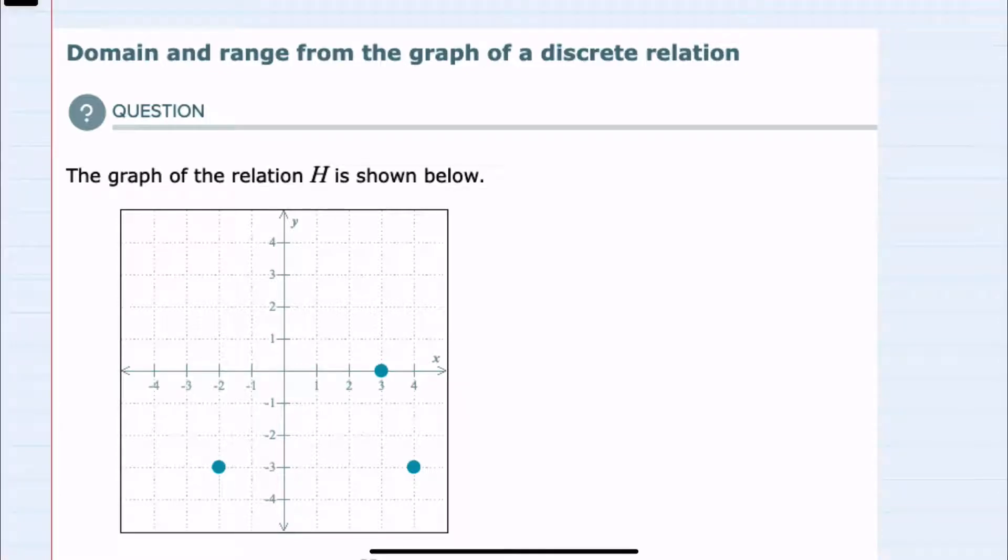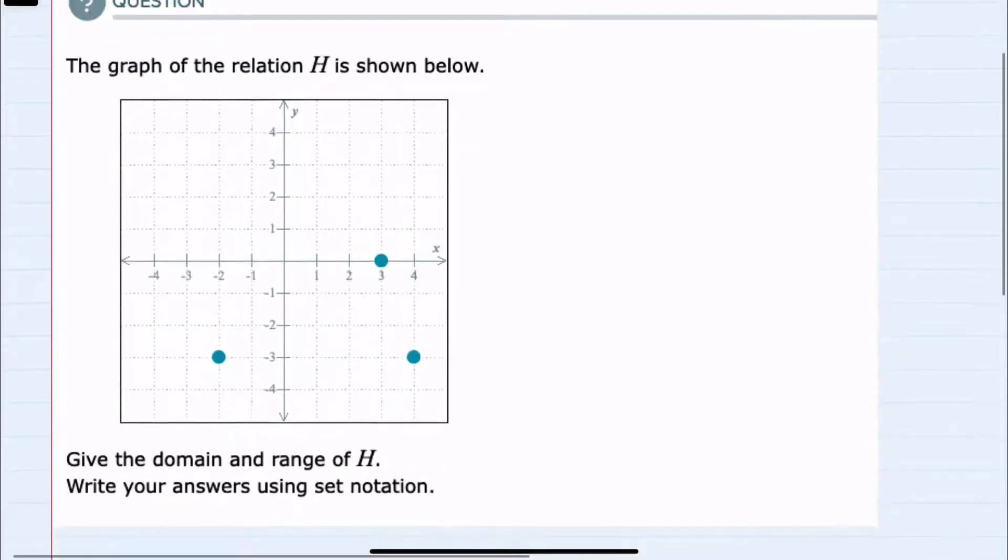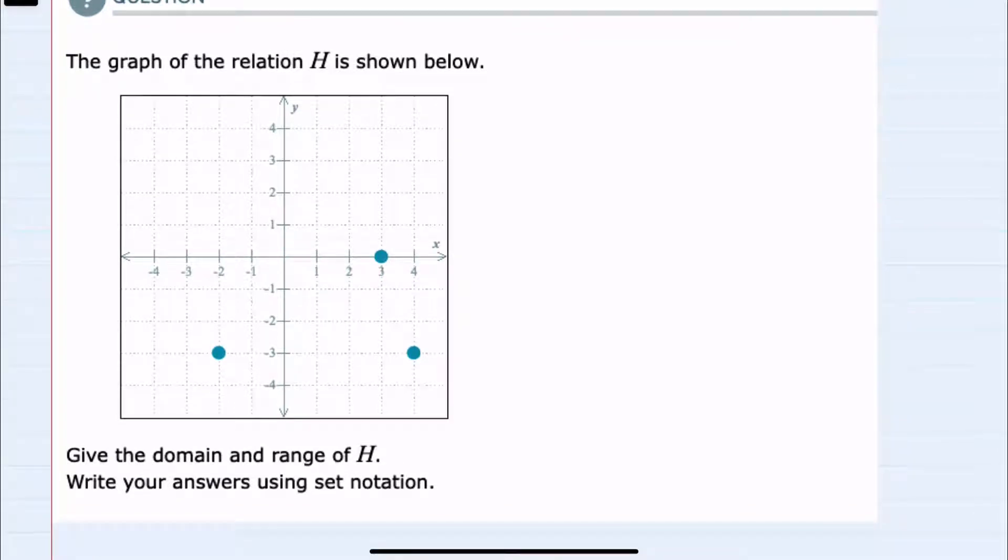In this video I'll be helping you with the Alex problem type called domain and range from the graph of a discrete relation. We're given the graph of the relation h, and we are asked to give both the domain and range of h using set notation.